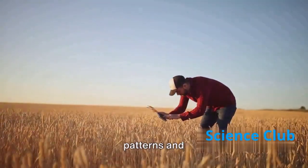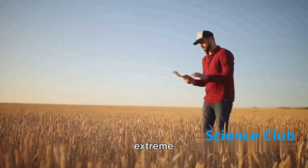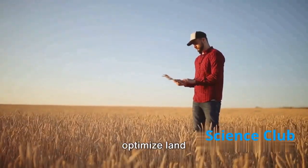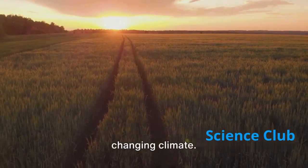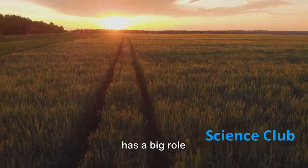As our planet changes, AI can help us adapt. It can predict climate patterns and help us prepare for extreme weather events. It can also optimize land and water use in agriculture, ensuring food security in a changing climate. Clearly, AI has a big role to play in our fight against climate change.